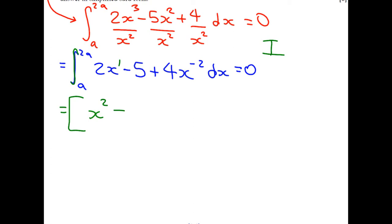If we just have a constant on its own, then we just put an X. That's because we've got 5X to the 0, and the same rule applies. Now, be careful with negatives. When you increase the power, you're going to go to minus 1. And then you have to divide by minus 1. So, it's going to be minus 4X. The limits that we integrate between are 2A and A.